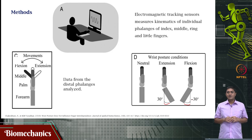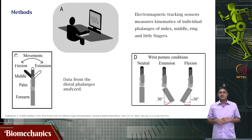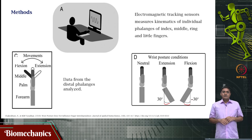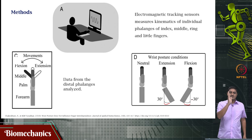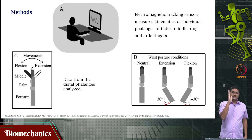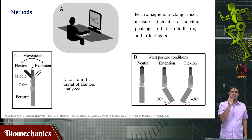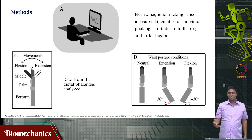Right now our focus is the methods and experimental approach. We used three different wrist postures — neutral, flexion at 30 degrees, and extension at 30 degrees. In each of these, we instructed either the index finger, middle finger, ring finger, or little finger.